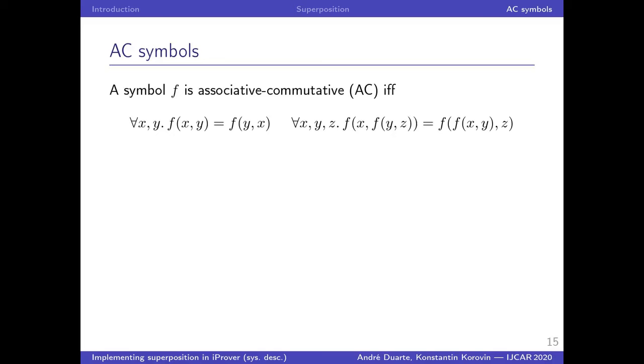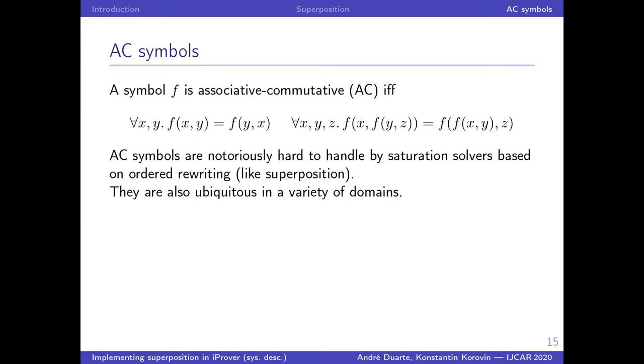Finally, another issue that I'd like to discuss, if I still have time, is associativity and commutativity. So a symbol is AC if these axioms hold for it for the associativity and commutativity. AC is notoriously difficult to handle in calculi like superposition, which rely on a reduction order. And as it happens, they are also used pervasively in nearly every domain. So techniques to handle this are very important.